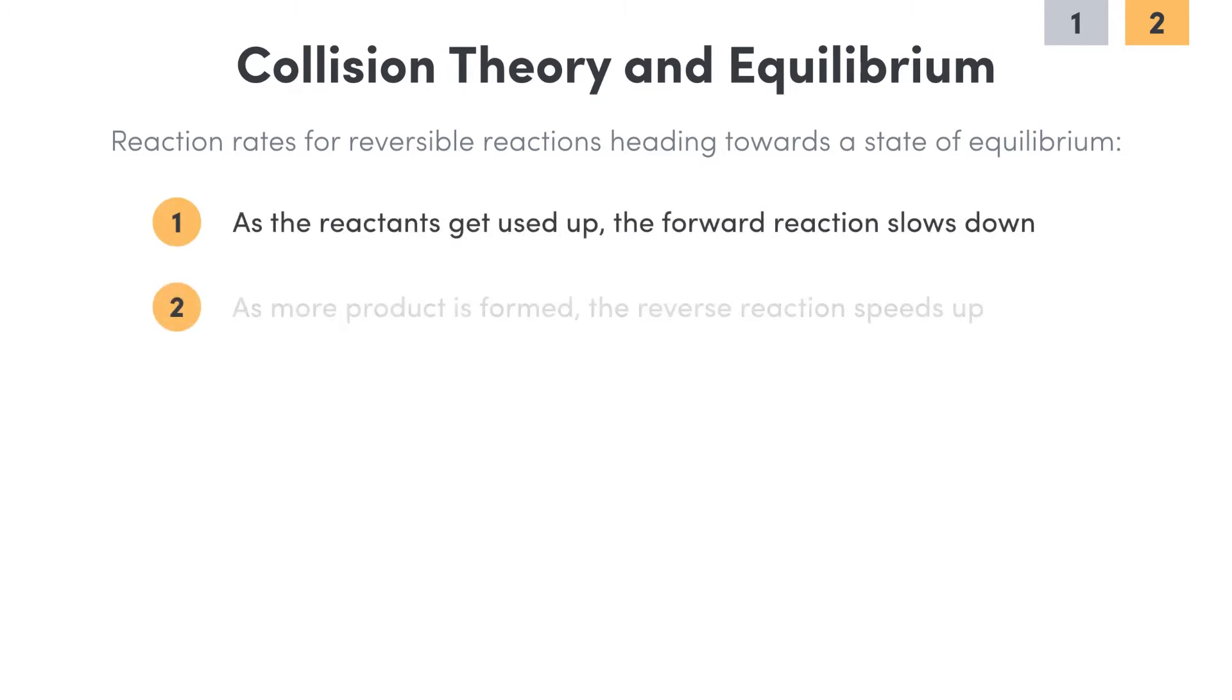And as more product is formed, the reverse reaction speeds up. Of course, eventually these reach a point where the rates are equal and the equilibrium is reached. So let's now take a look at why this is and then relate it to collision theory.